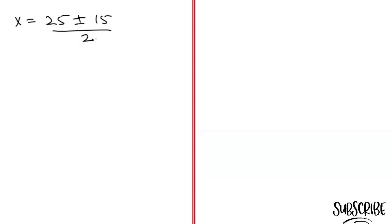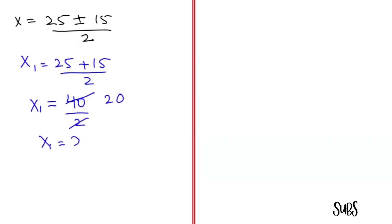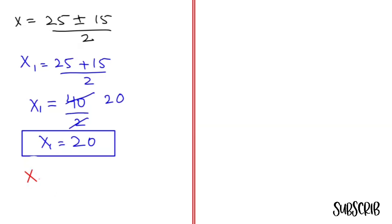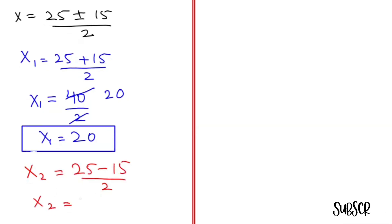Now we have the plus and minus signs. So x1 equals 25 plus 15 over 2, which equals 40 over 2, so x1 equals 20. And x2 equals 25 minus 15 over 2, which equals 10 over 2, so x2 equals 5.